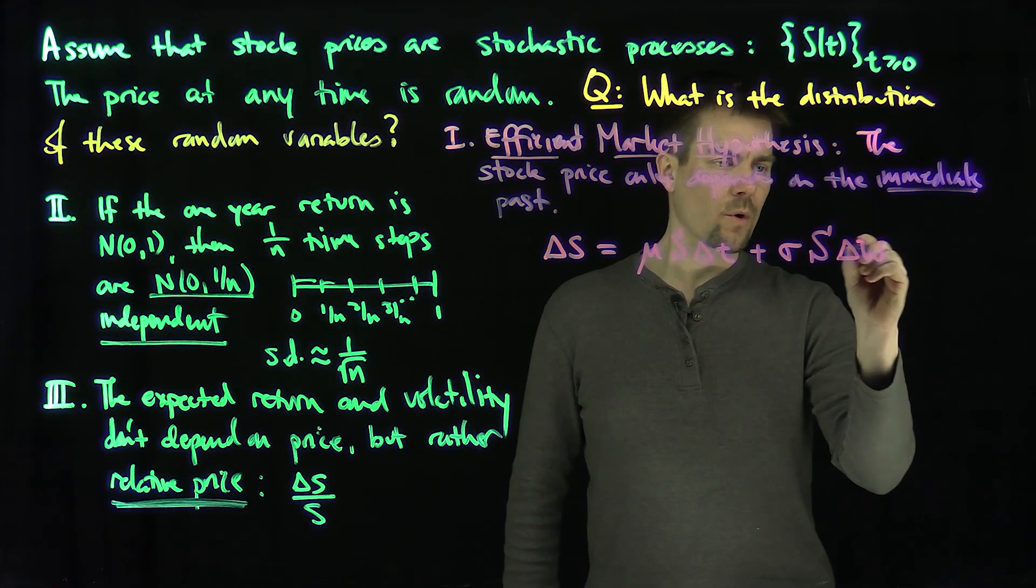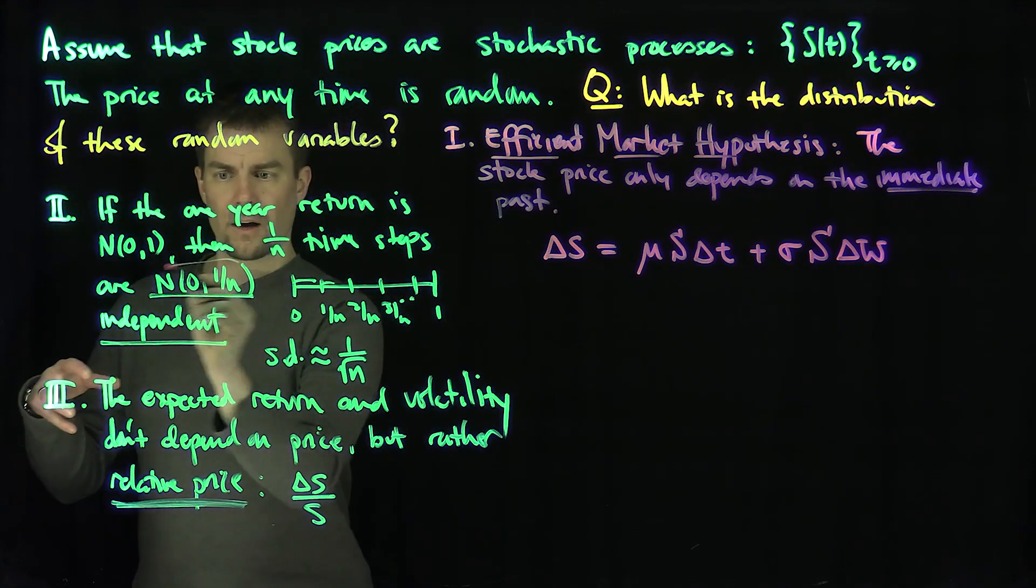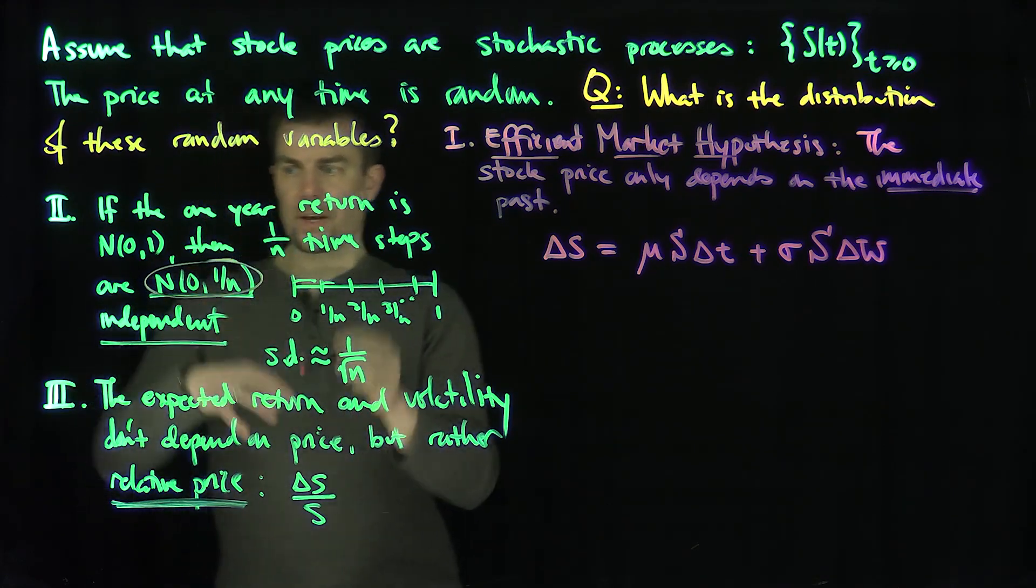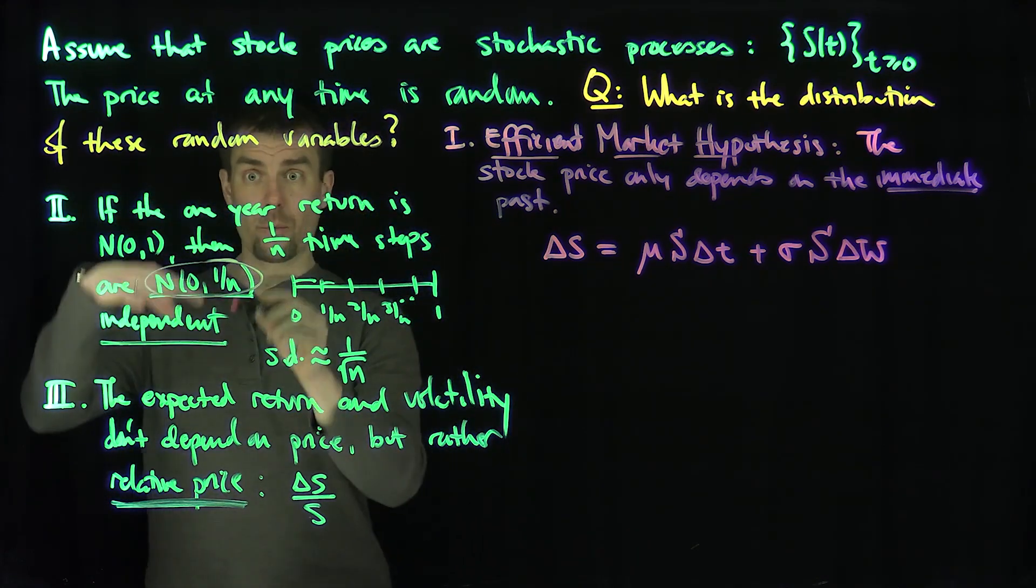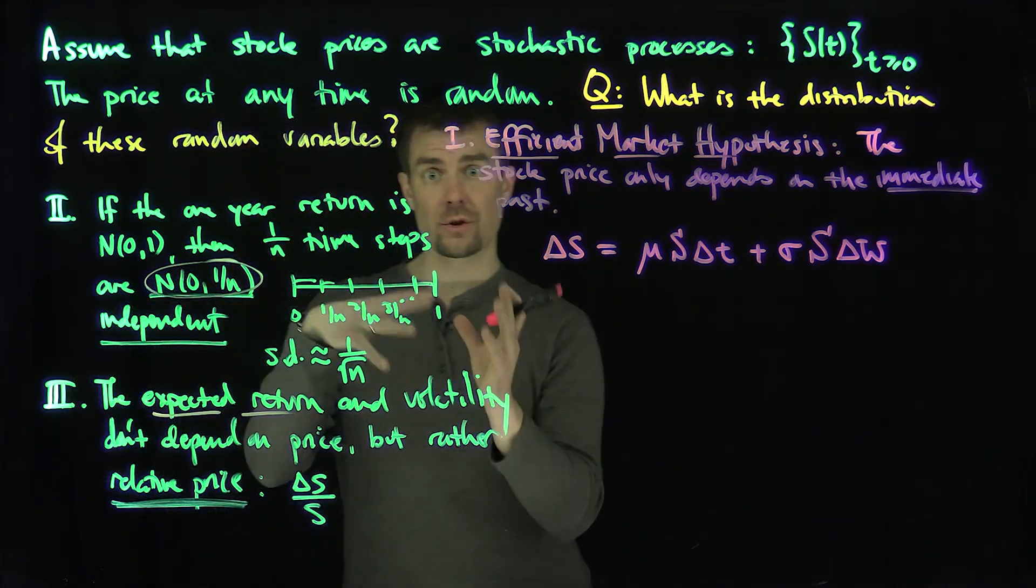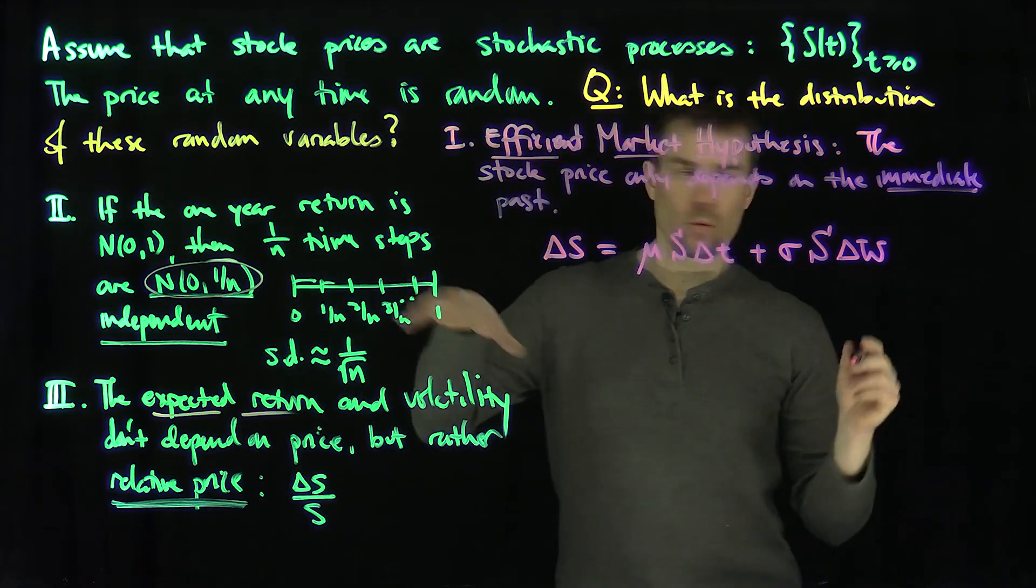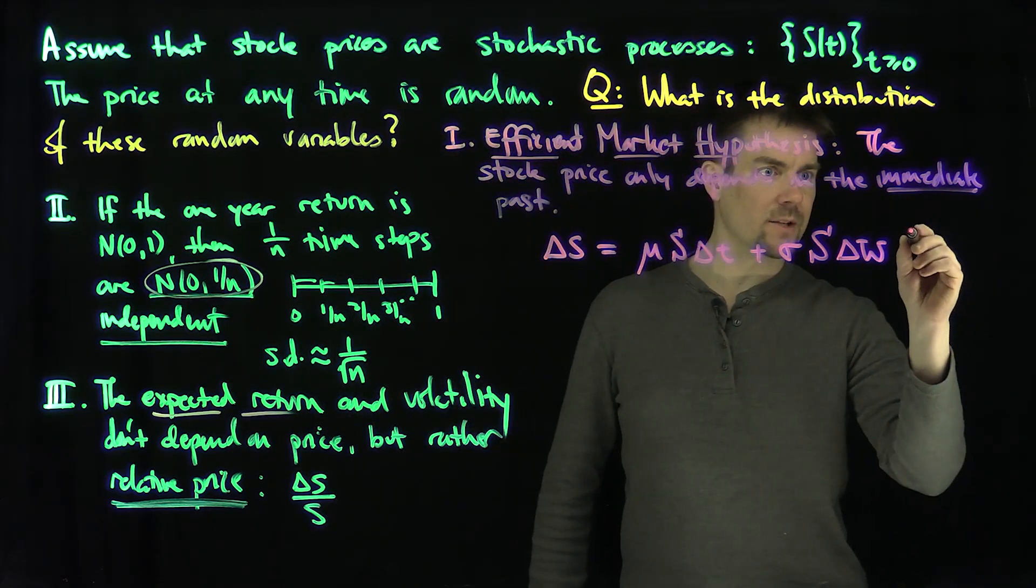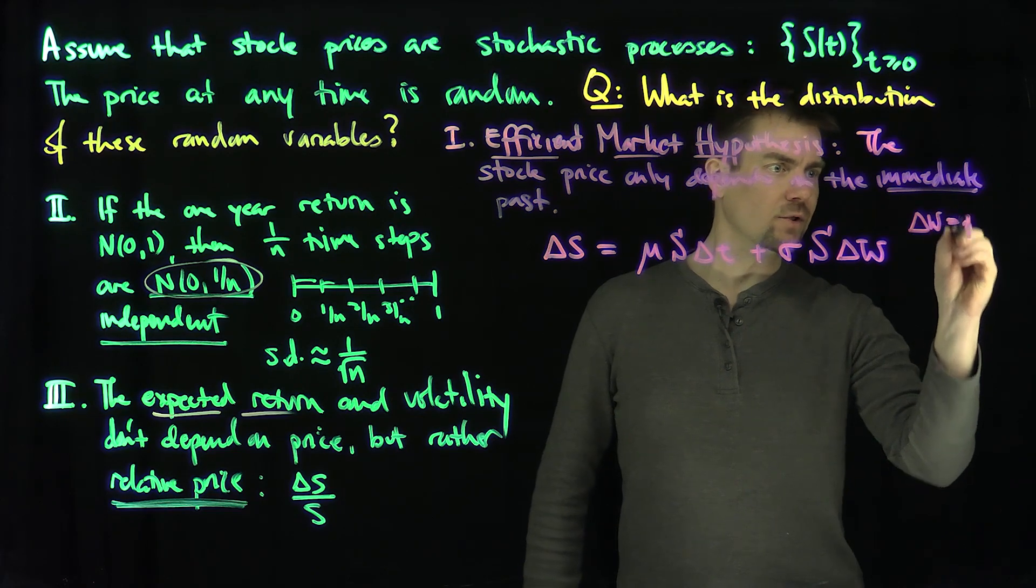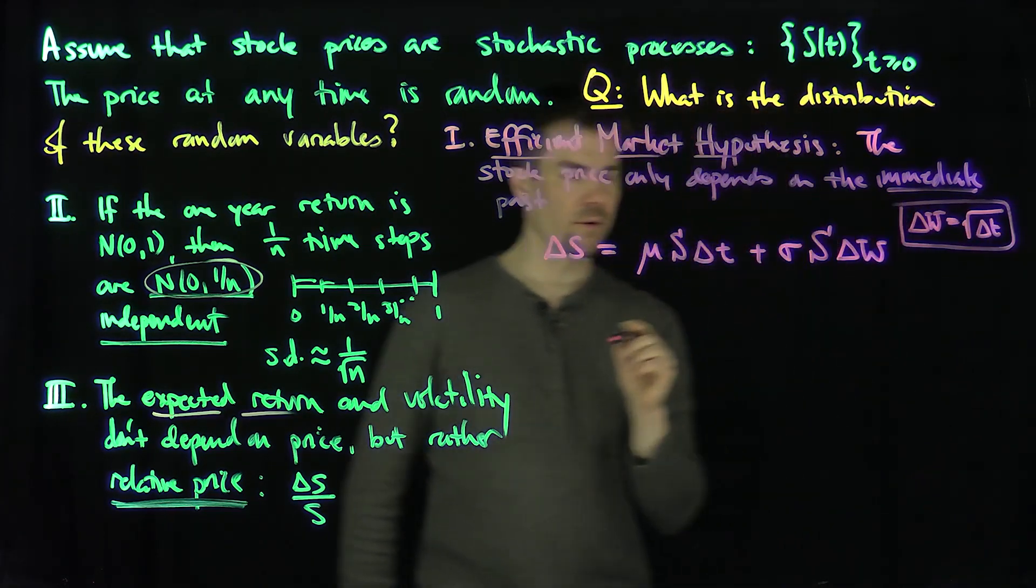And then a delta W, where this delta W scales like—that's the increments of the randomness of the expected returns. That's the random part. And that's the expected return. So you have an expected return, which is deterministic, and a random component of the volatility. This delta W behaves like the square root of delta T.